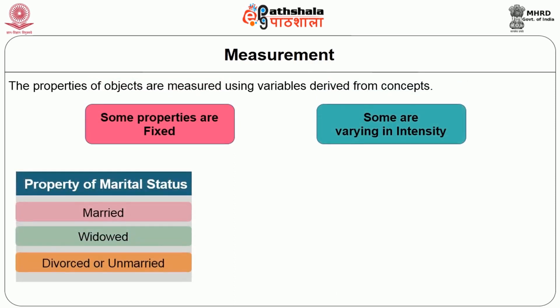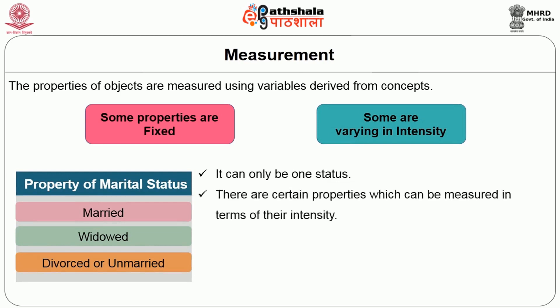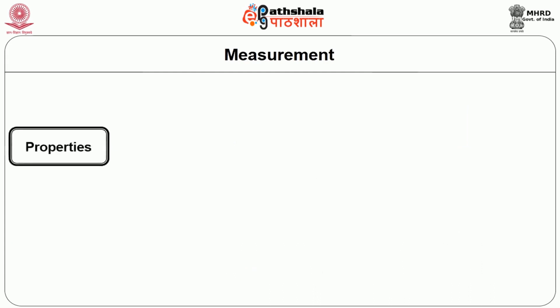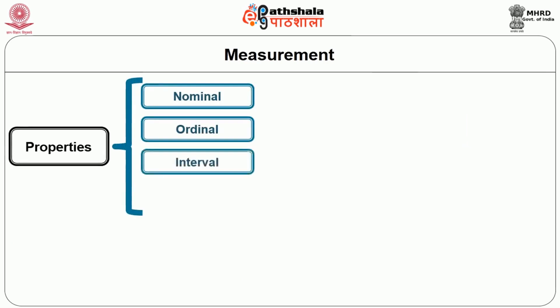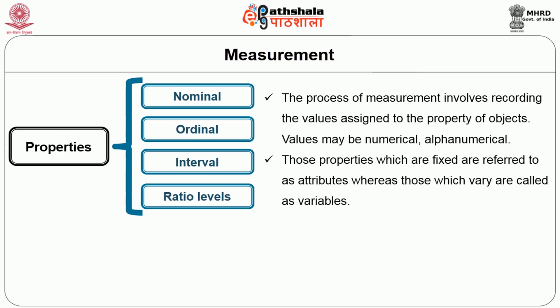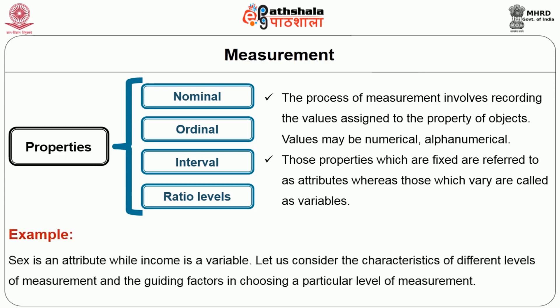Some properties are fixed and some vary in intensity. For example, marital status can only be one of: married, widowed, divorced, or unmarried. However, certain properties can be measured in terms of their intensity. The term 'variable' refers to object properties conceived as varying in quantity or magnitude — for example, an individual can have more or less income. Properties are measured at four levels: nominal, ordinal, interval, and ratio. The process of measurement involves recording values assigned to the property of objects; these values may be numerical, alphanumerical, or alphabetical. Fixed properties are called attributes, while those which vary are called variables — for example, sex is an attribute while income is a variable.